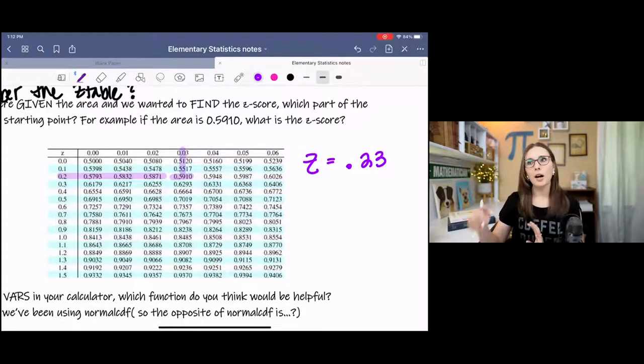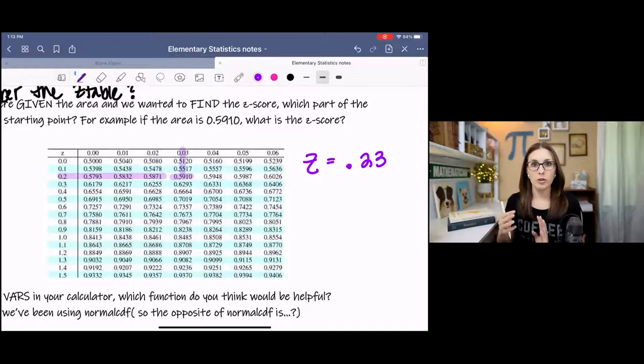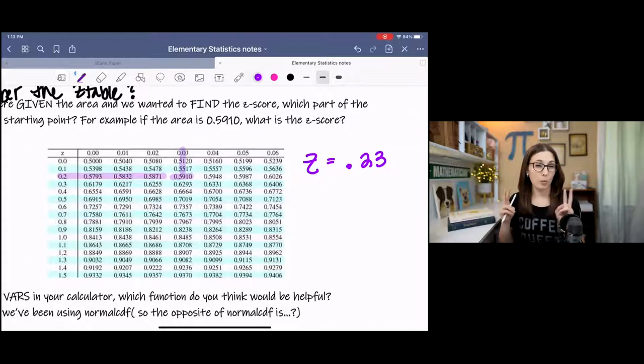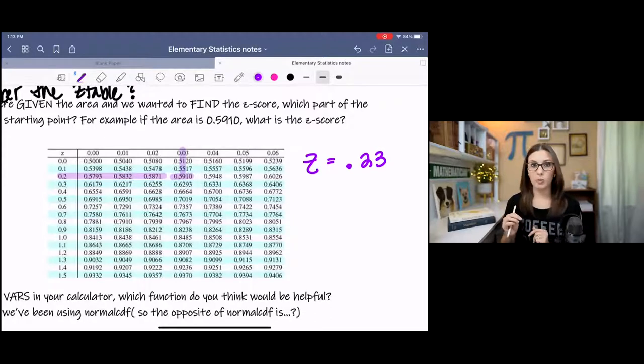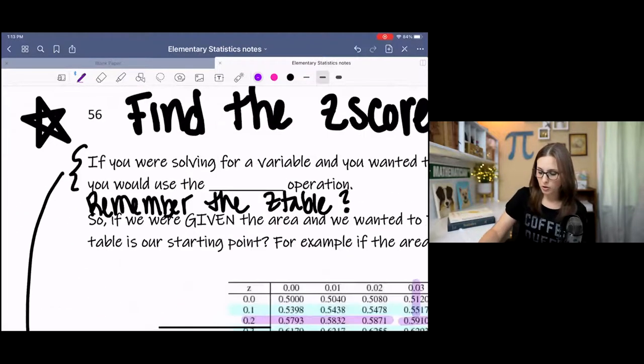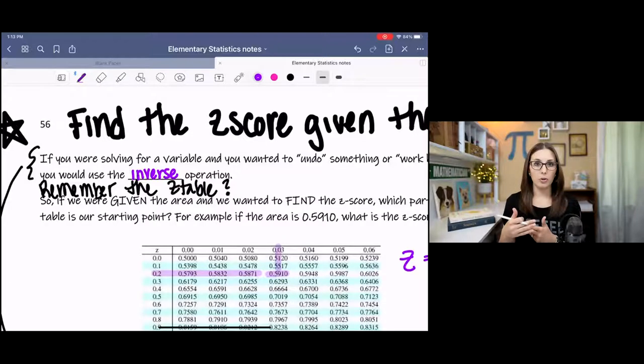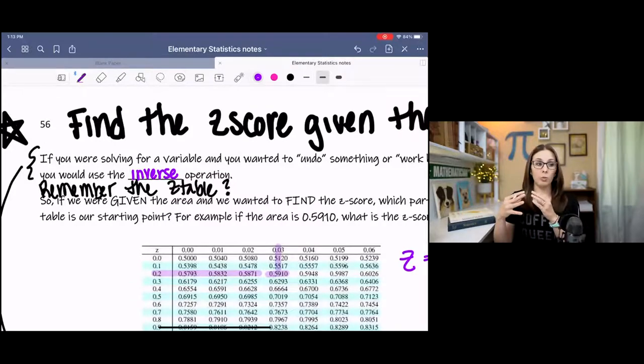Now, if you think about algebra, if you've ever taken an algebra course, and you remember solving equations, when we were solving for a variable, we kind of worked backwards or undid. What that actually means is you're looking for what's called an inverse operation. So when you're working backwards or you're undoing, this is called an inverse operation. So what we've just done with this table, we've worked backwards. We started with the area and we found the z-score. That's an inverse operation.